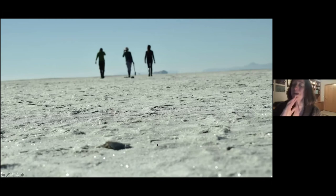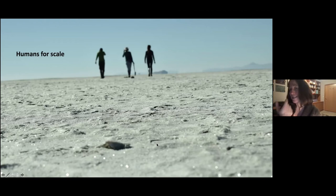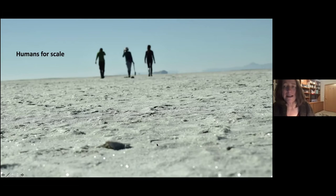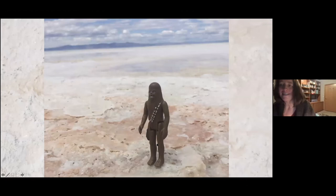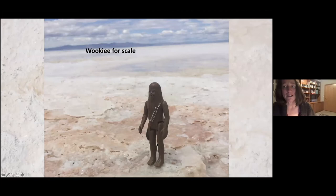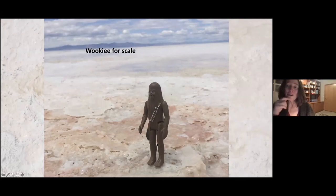One funny thing: in geology, they always put humans in the picture for scale. In microbiology we use a little scale bar in the micron range. So when you read a geology paper and they say 'humans for scale,' I have my own take on that. This is my 1977 Chewbacca, and I say 'Wookie for scale.' My students and I actually got this published — we didn't mention George Lucas in the credits, so hopefully we don't get sued. He is exactly 10 centimeters, making him an excellent scale bar.